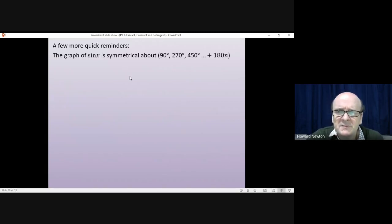What's the consequence of that symmetry? It means, for instance, looking around 90, because it's symmetrical around 90, the sine of 90 plus x is exactly the same as the sine of 90 minus x. So, for instance, if x was 30 degrees, the sine of 120 is identical to the sine of 60.